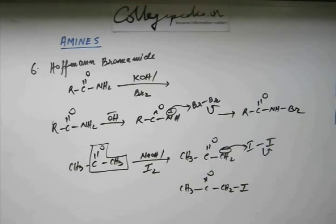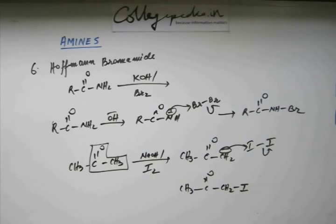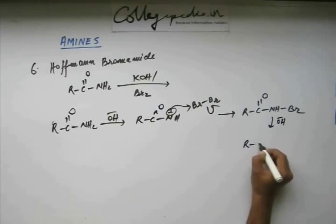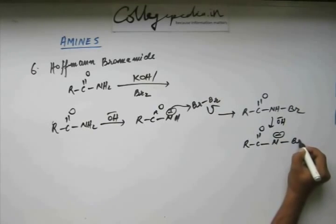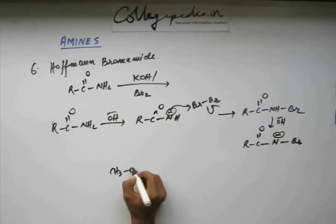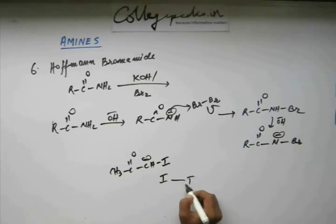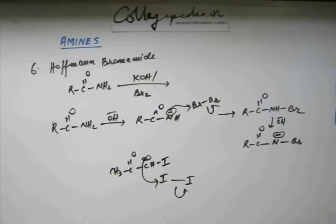This N-Br intermediate is very similar to the haloform intermediate. As in haloform, the base comes again and abstracts the remaining hydrogen from nitrogen, because the inductive (-I) effect of bromine makes that hydrogen more acidic. This is the third step — the base abstracts hydrogen from nitrogen, and nitrogen gains a negative charge once again.